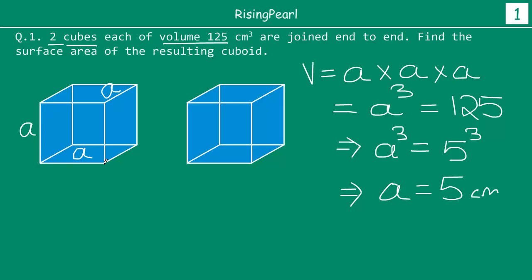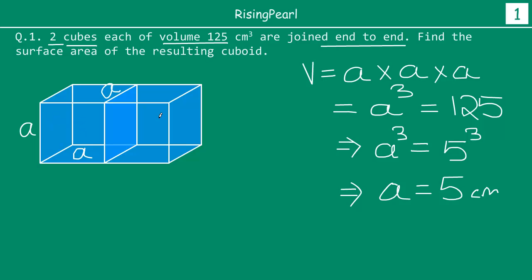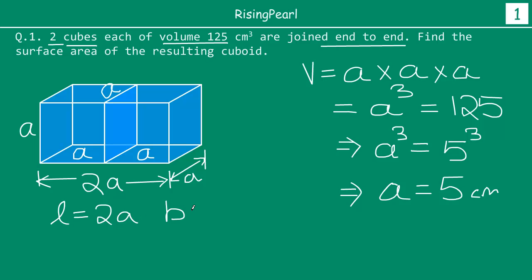Now, these two cubes are joined end to end. We get them closer and closer, and this is how both are joined — we have a new cuboid. For the new shape, the height still remains A. The length was A for one cube, and with one more A added, the length has become two times A. The height is still A and the depth is still A, so the only thing that has changed is the length.